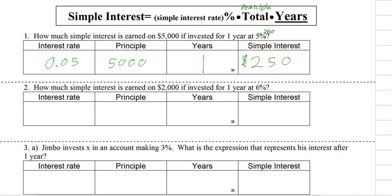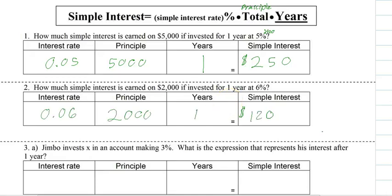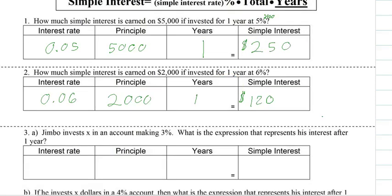So if you were to borrow $5,000 at 5% for one year, you'd have to pay back $250 in interest plus the $5,000 you borrowed. Give the next one a shot — hit pause now. You should have gotten $120. This is pretty simple, right? That's why it's called simple interest.